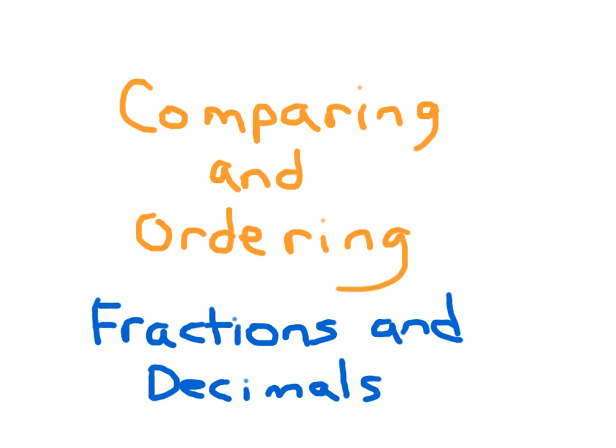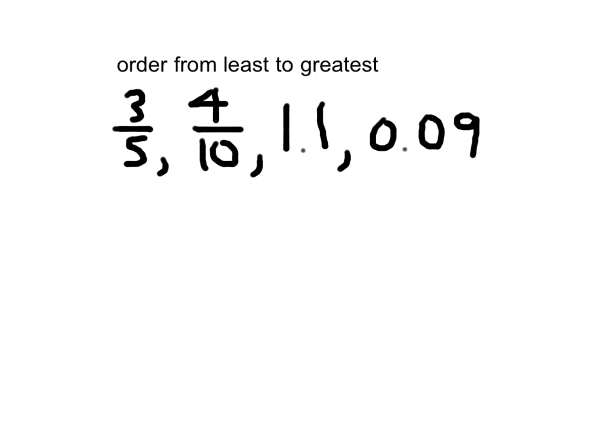Today we're going to learn about comparing and ordering fractions and decimals. We might be asked to order from least to greatest, and this list not only contains fractions but also contains decimals. So in order to compare them, it's easiest to go ahead and write them all out in decimal form.